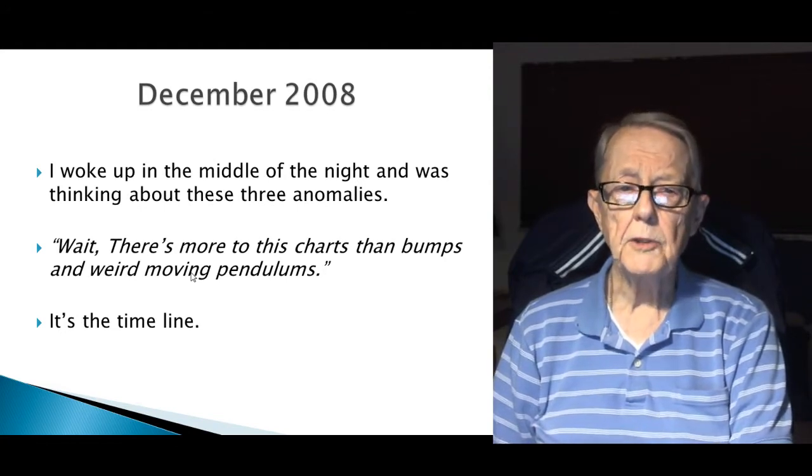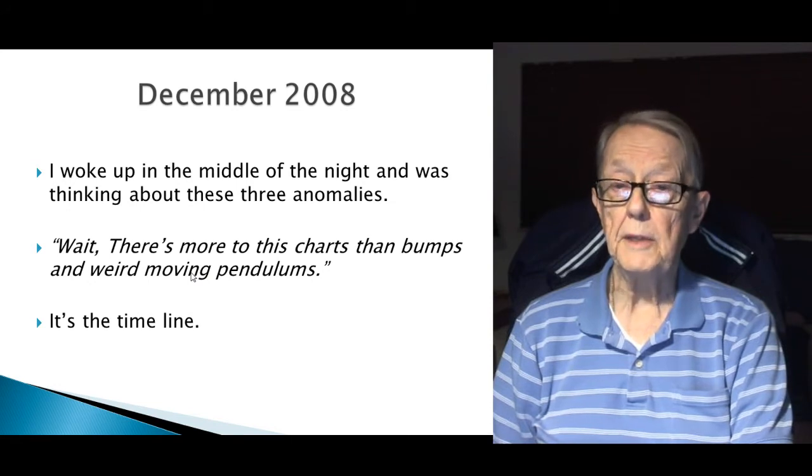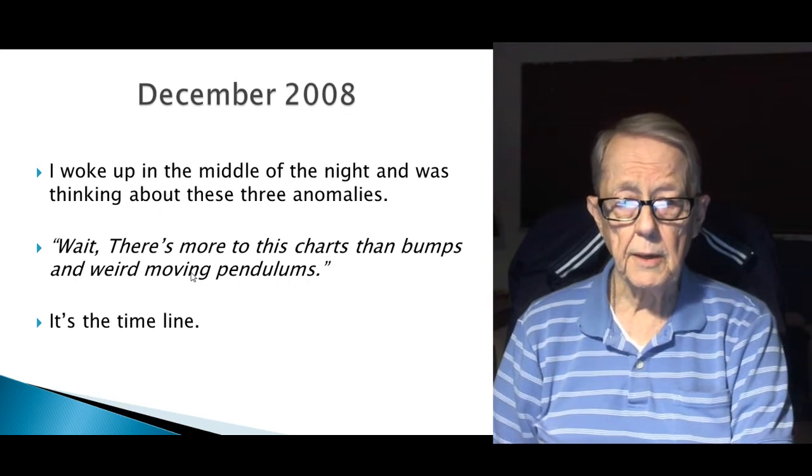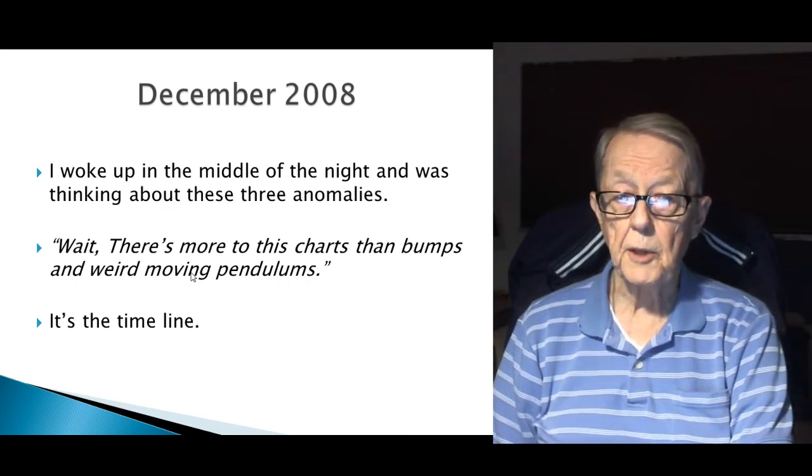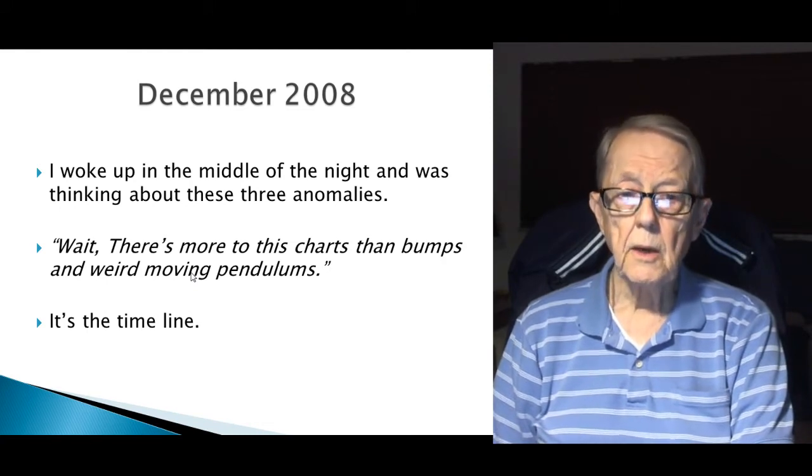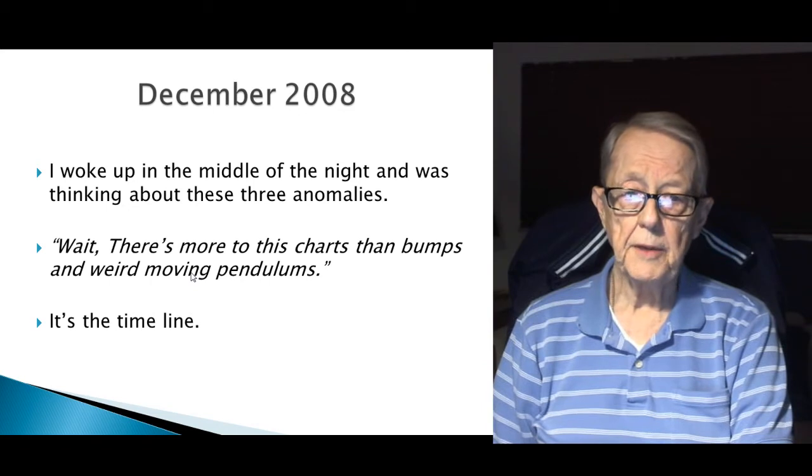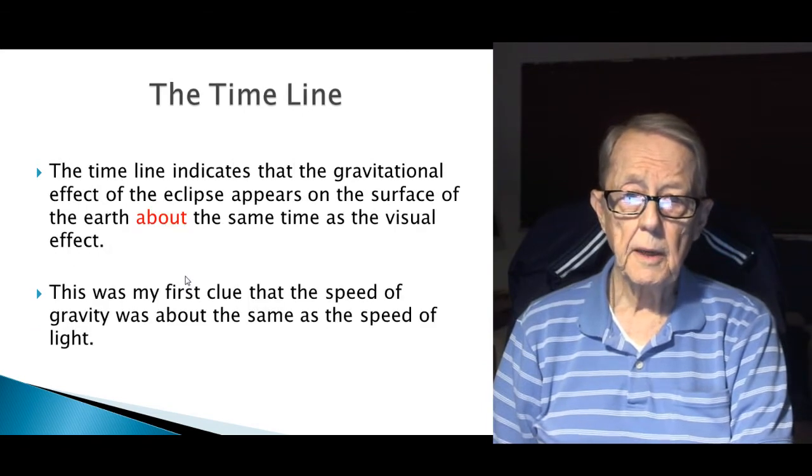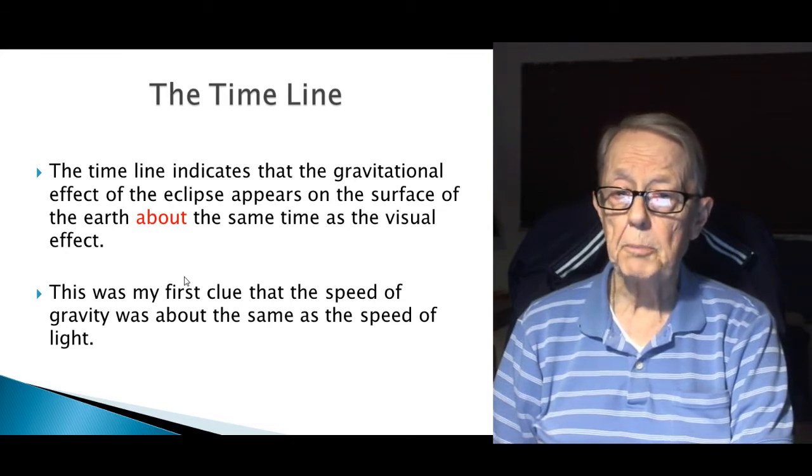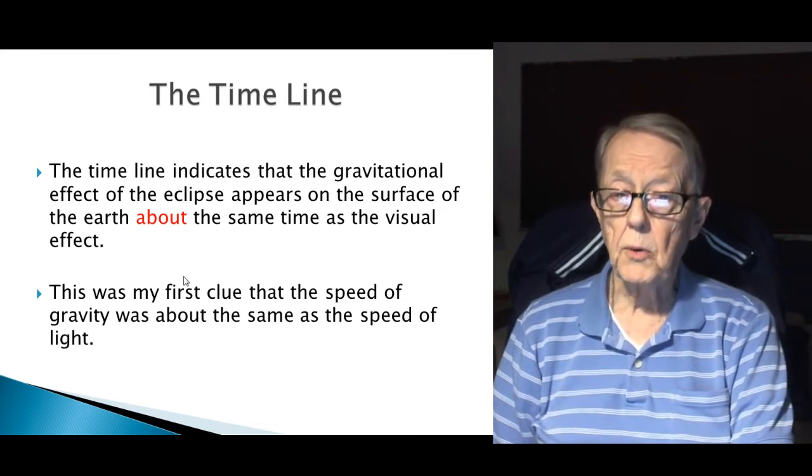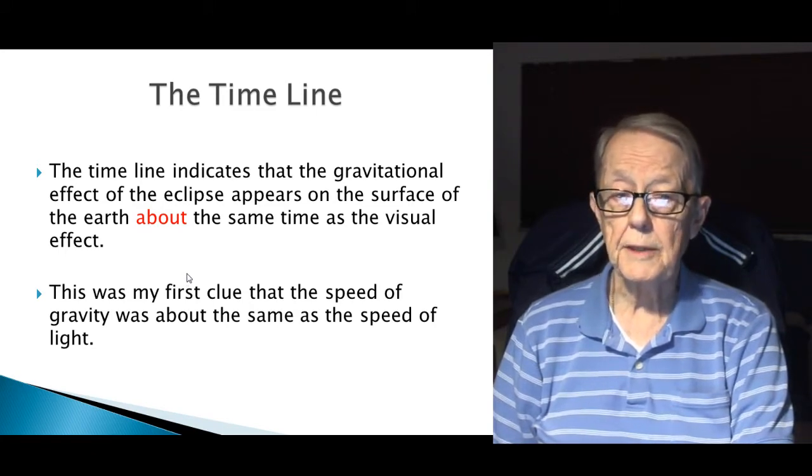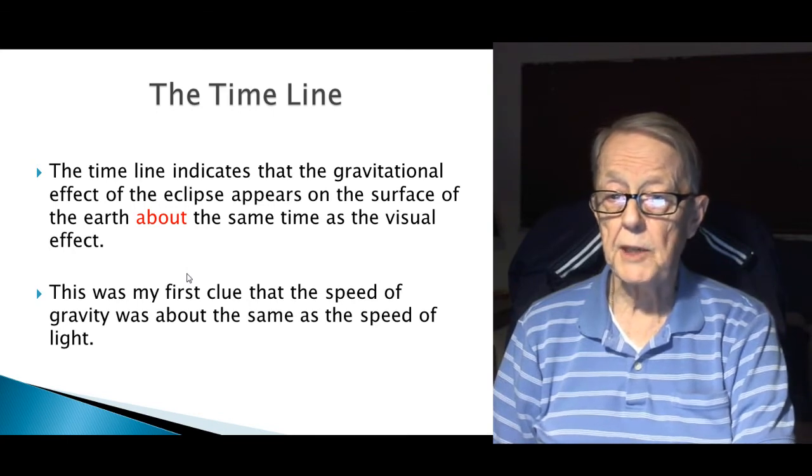It was December 2008. I woke up in the middle of the night and was thinking about these anomalies. And I was laying there thinking about it. I said, now wait, wait. There's more to these charts than bumps and the weird moving pendulums. It's the timeline that's of interest to me. The timeline indicates that the gravitational effects of the eclipse appears on the surface of the Earth about the same time as the visual effect. This was my first clue that the speed of gravity was about the same as the speed of light.